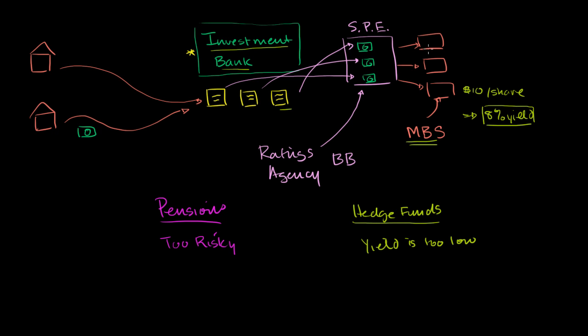So instead of all of the securities being the same, why don't I put them into classes? And they're often called the senior tranche, the mezzanine tranche, I'll just write mez for short, or the middle tranche, and then the equity tranche.